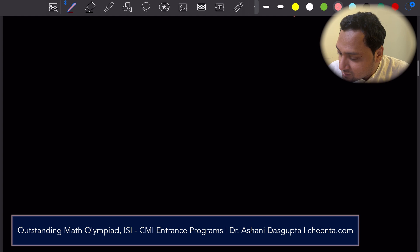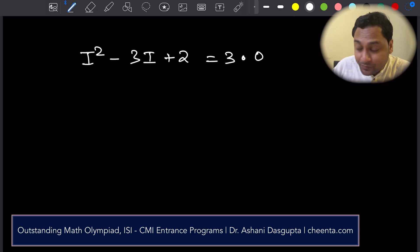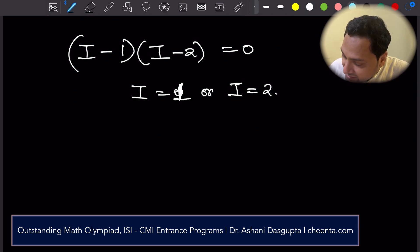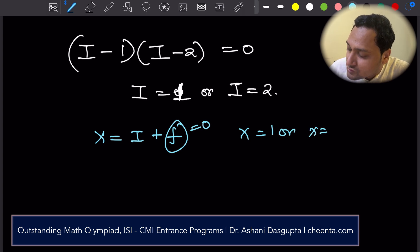So let's plug in each of them. So first of all, when i squared minus 3i plus 2 is equal to 3 times 0, so that is 0. Now this one is easy because this is i minus 1 times i minus 2 is 0. So i is equal to 1 or i is equal to 2. So x is i plus f but f is 0 in this case. So x is equal to 1 or x is equal to 2. That's the first case, the easier case.